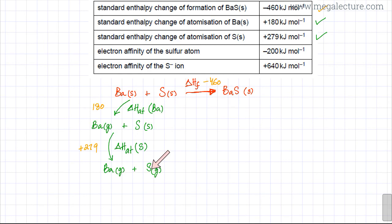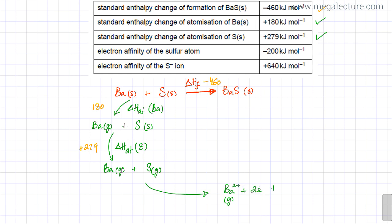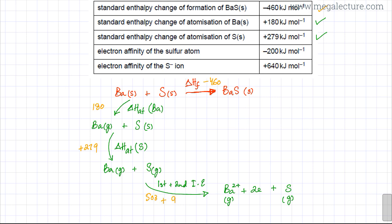Now we have gaseous atoms and need to form ions to eventually build the ionic lattice. Barium needs to lose two electrons to form a 2+ ion, so in the next step barium loses two electrons to form gaseous Ba²⁺ ions. This arrow represents the first plus second ionization energy of barium. The first ionization energy is 503 kJ/mol and the second is 965 kJ/mol, since barium is in group 2 and two electrons must be removed.